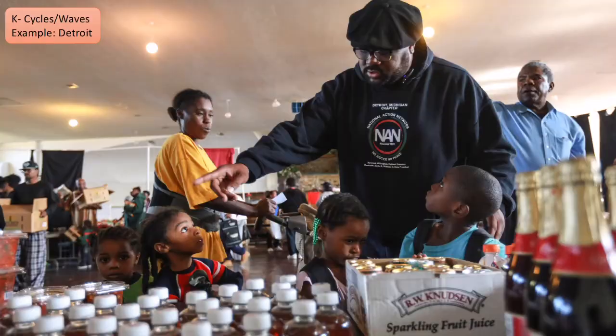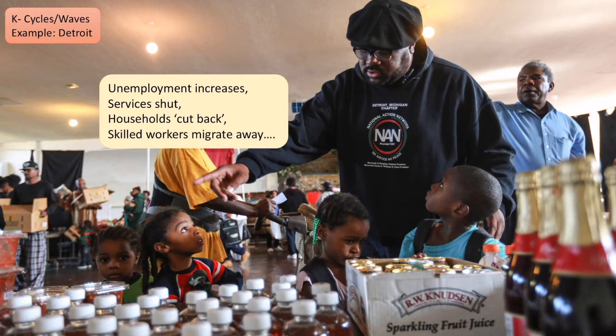This obviously affected people as well. Unemployment increased, people had less money, and because of that those services shut. Households retracted their spending to essentials. We can see people at a food bank because they have so little money they're having to rely on volunteer support for basic needs. Anybody who is skilled normally migrates away. Detroit is just one example — this happened in lots of places with big manufacturing units. In the UK, Glasgow, Sheffield, and Birmingham all experienced very similar effects in terms of inequalities.